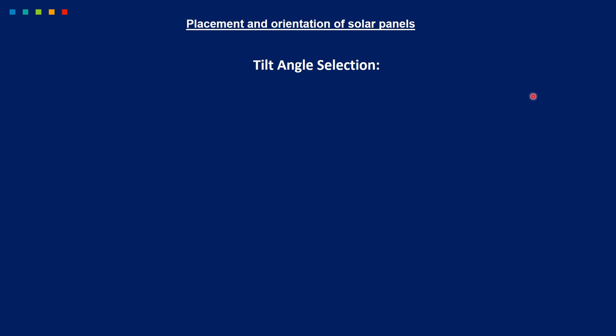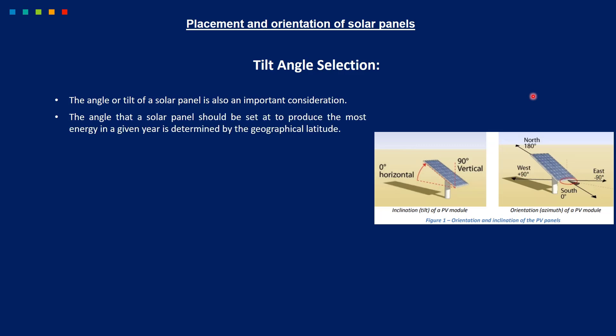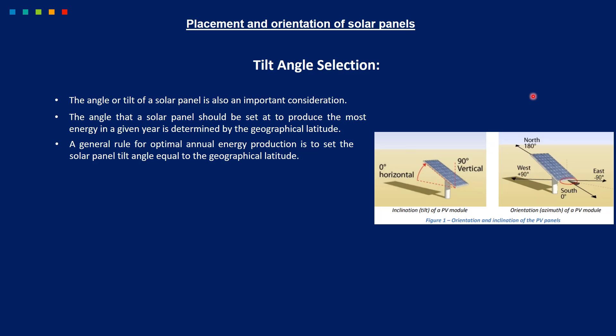The second factor is the tilt angle selection. The angle or tilt of a solar panel is also an important consideration. The angle that a solar panel should be set at to produce the most energy in a given area is determined by the geographical latitude. A general rule for optimal annual energy production is to set the solar panel tilt angle equal to the geographical latitude. For example, if the location is at 50 degrees latitude, then the optimal angle should also be 50 degrees.